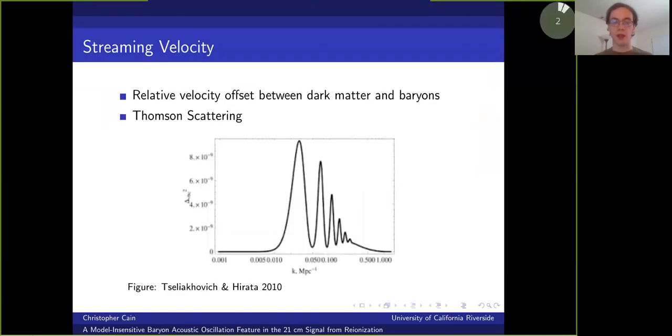So first, a little background. We know that BAO features appear in the 21 centimeter signal and some other cosmological observables thanks to the relative velocity offset between baryons and dark matter known as the stream velocity. This exists because of Thomson scattering between baryons and photons prior to kinematic decoupling, and its effects on early structural formation persist into the low redshift universe. Importantly, the power spectrum of spatial fluctuations in the stream velocity, which I've shown here, exhibits strong BAO features.